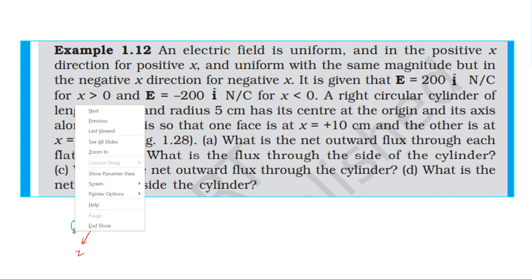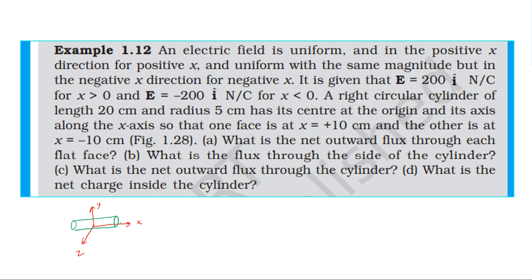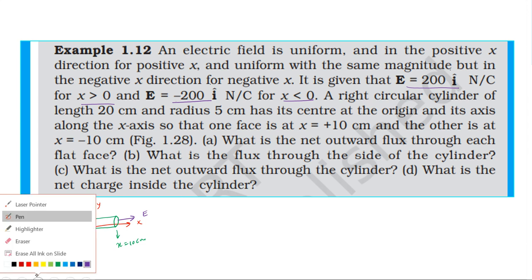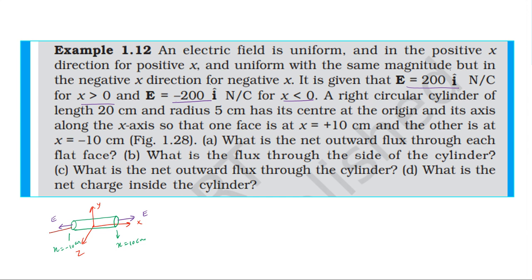The right face is at x equal to 10 cm and the left face is at x equal to minus 10 cm. The right side is in the positive x region, so the electric field is in the positive x direction. The left side is in the negative x region, so the electric field is in the negative x direction. For the left face, the outward area vector points in the negative x direction, and for the right face, the outward area vector points in the positive x direction.